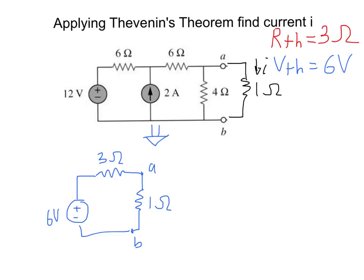We replace the original circuit with the Thevenin equivalent circuit: V Thevenin of 6 volts, plus minus 6 volts, connected in series with R Thevenin of 3 ohms. The 1 ohm load resistor is placed across A and B. Now it's easy to find current I through the 1 ohm resistor. We have two resistors, 3 ohms and 1 ohm, in series. Using Ohm's law: I equals 6 volts over (3 plus 1) ohms, giving a current of 1.5 amps.